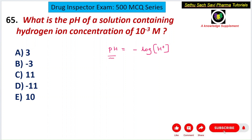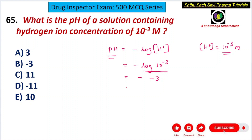The hydrogen ion concentration given is 10⁻³ molar. Substituting into the equation: pH = −log(10⁻³). The logarithm of 10 raised to any power equals that power, so log(10⁻³) = −3. Therefore pH = −(−3) = +3. The pH of the solution with hydrogen ion concentration of 10⁻³ molar is 3, so the answer is choice A.